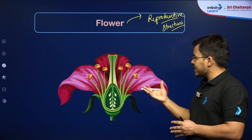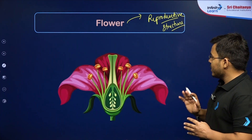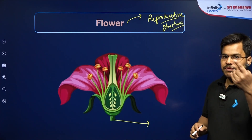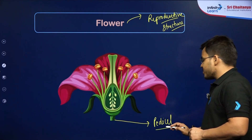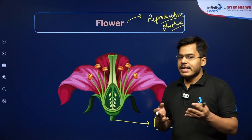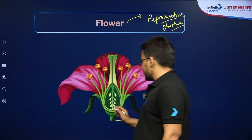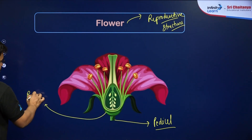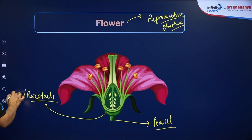Let's look at the different parts of the flower one by one. First, you can see the stalk at the bottom — this part that attaches the flower with the plant is known as the pedicel. Some flowers don't have a pedicel, but many do. Below the flower, there is also a swollen region known as the receptacle.